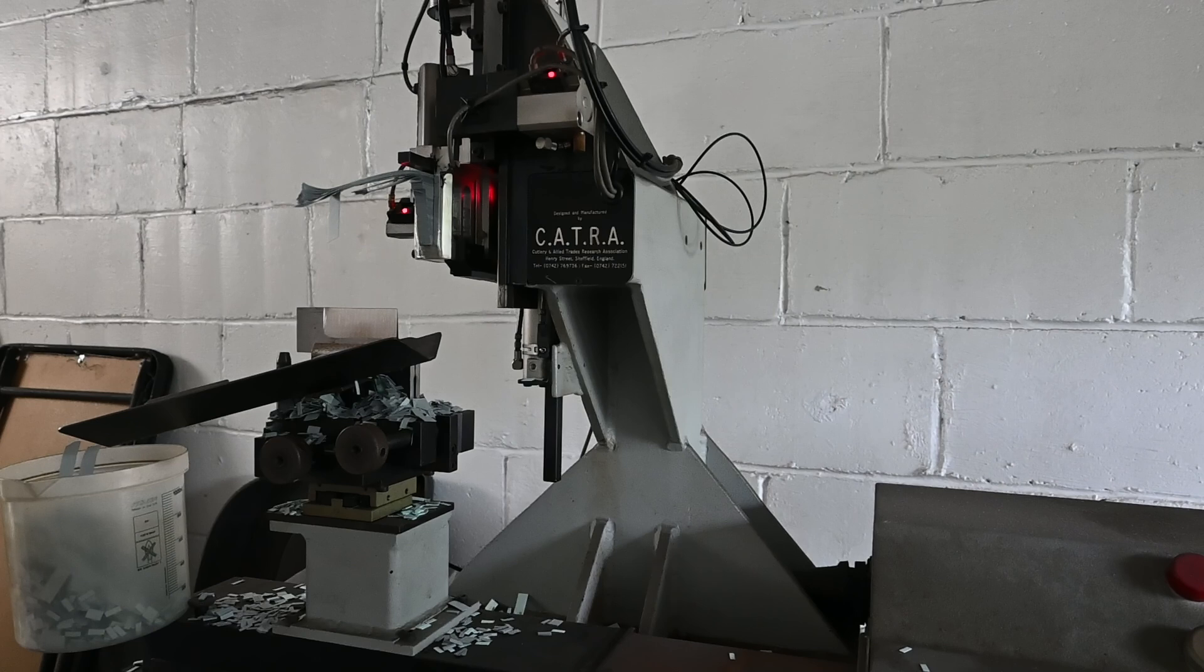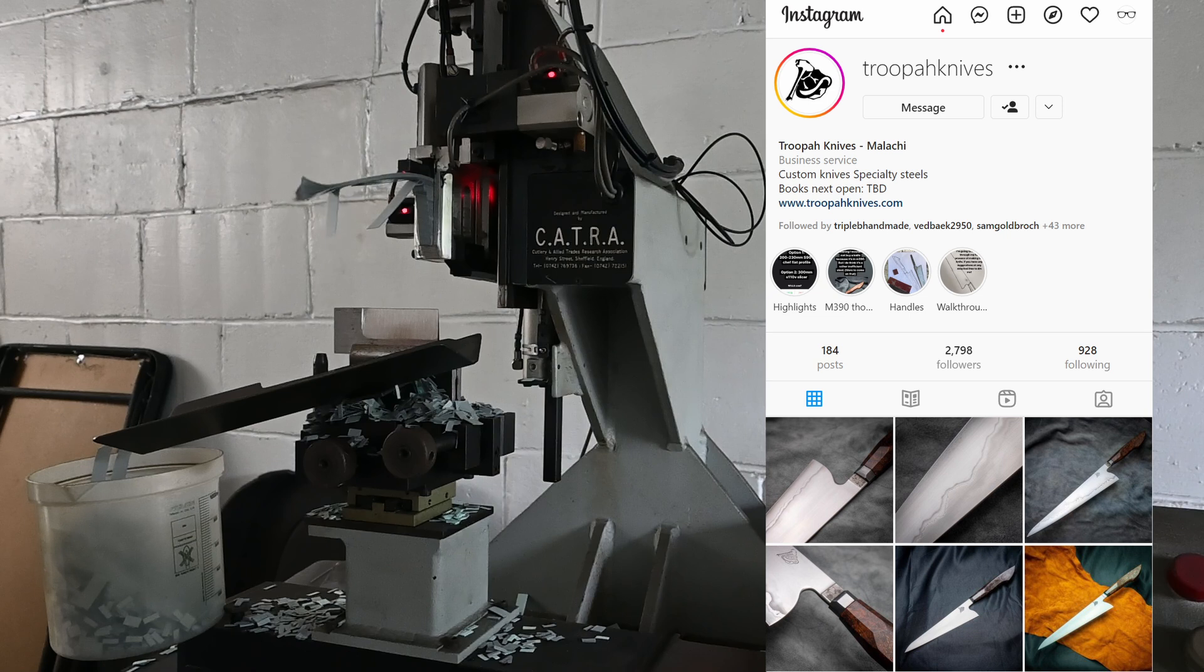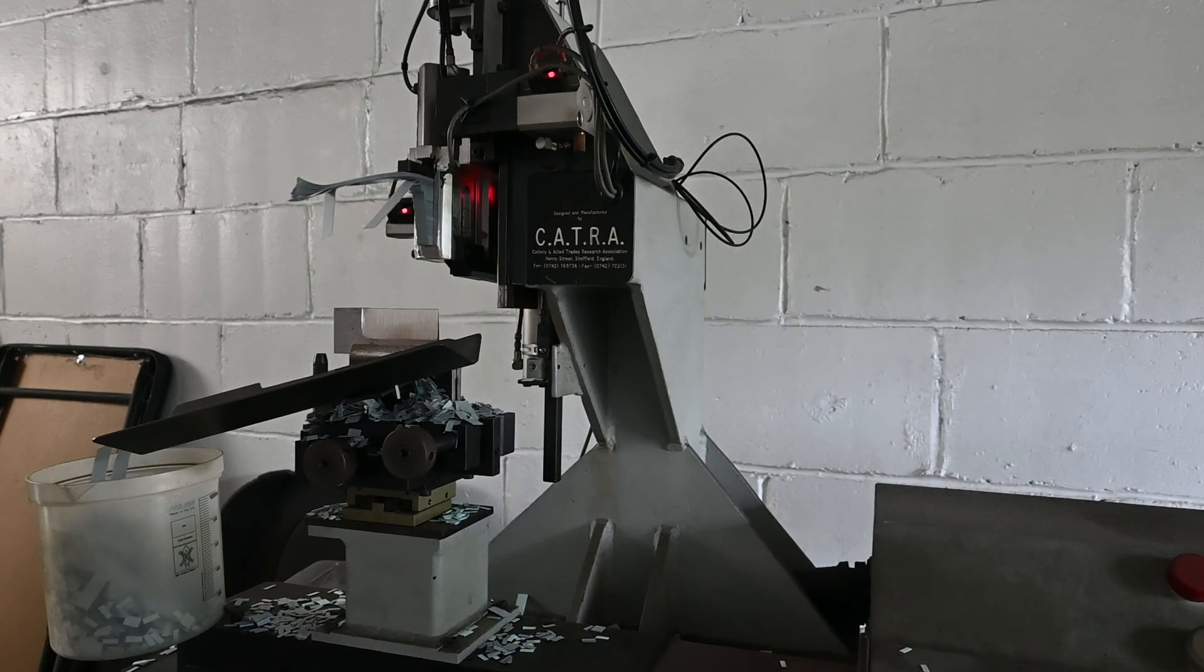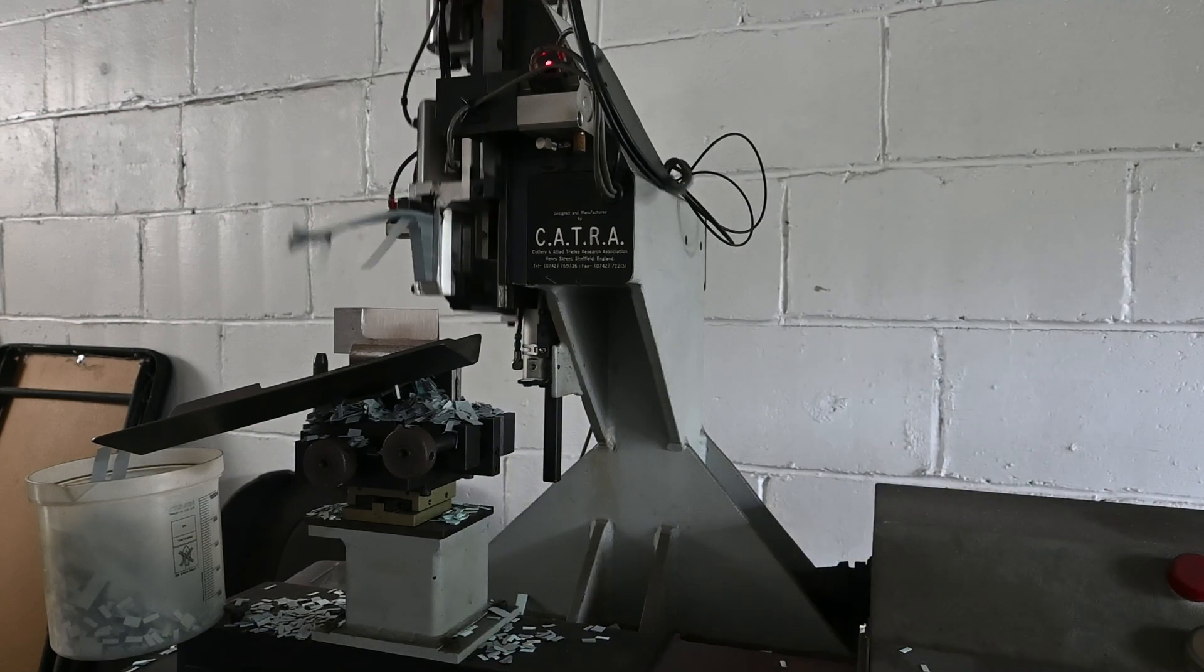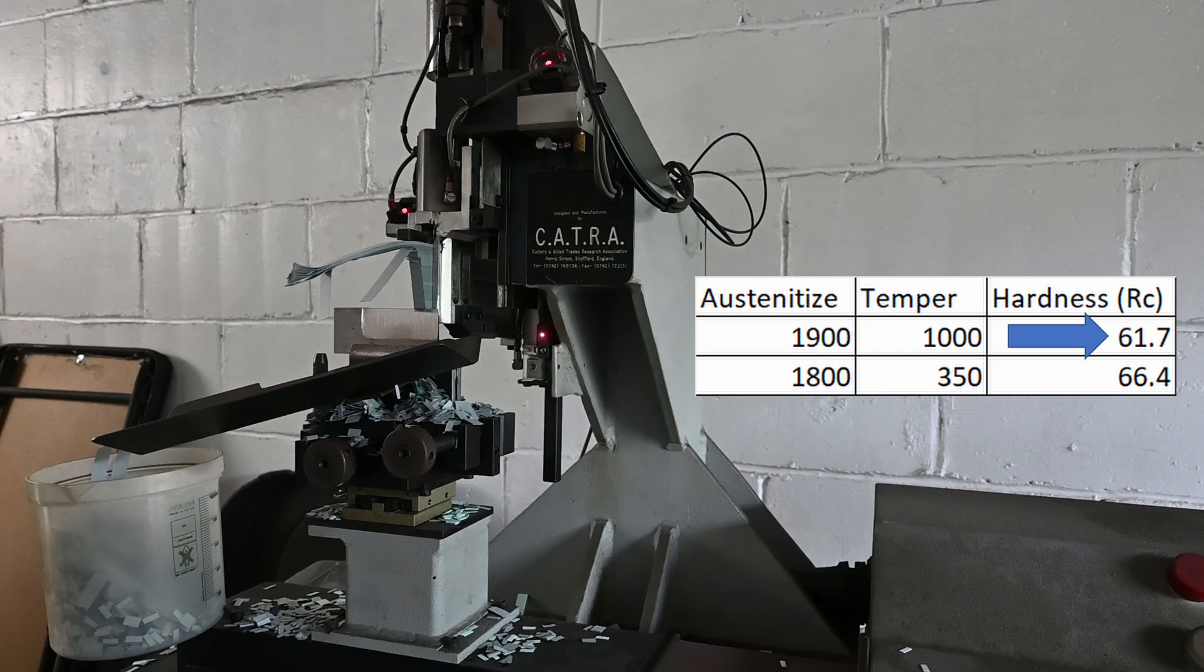I was able to get some VANCRON from Malachi of Troopa Knives. I had done some hardness testing with a very small amount of the steel before, but this was the first time I had enough steel to do edge retention and toughness testing. So I did two different heat treatments to give me about 61.5 Rockwell C and 66.5 RC.